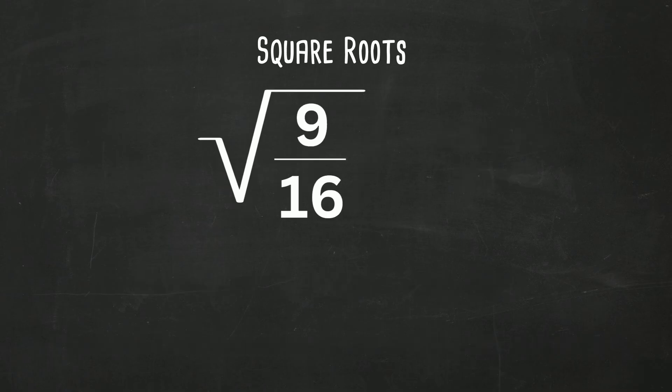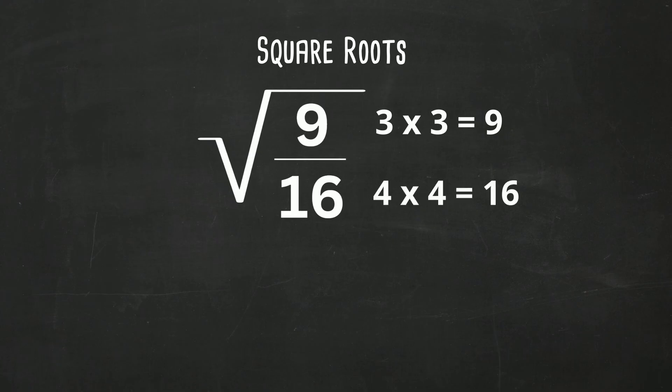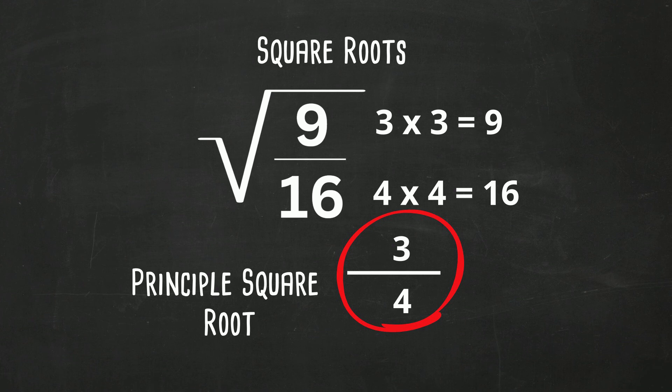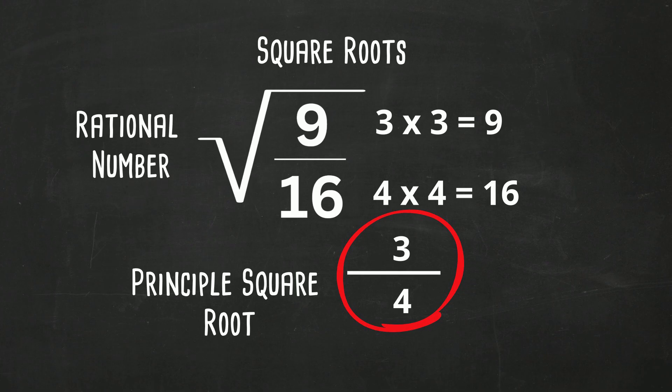How about the square root of 9 sixteenths? The square root of 9 is 3, and the square root of 16 is 4. They're two perfect squares, so it equals 3 fourths, and it is a rational number.